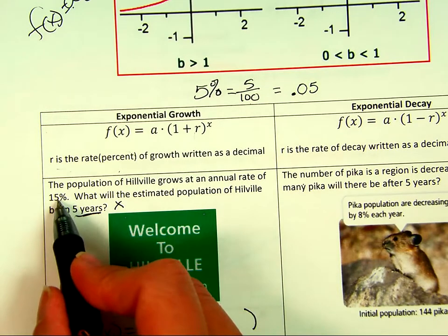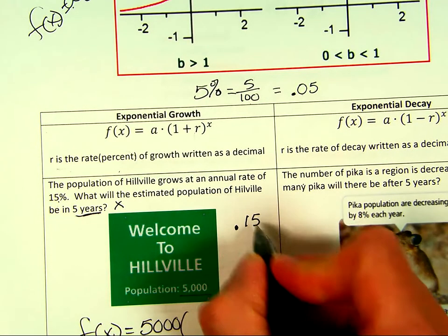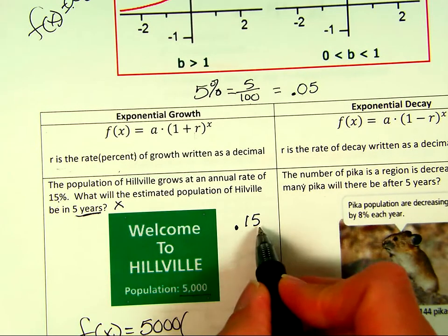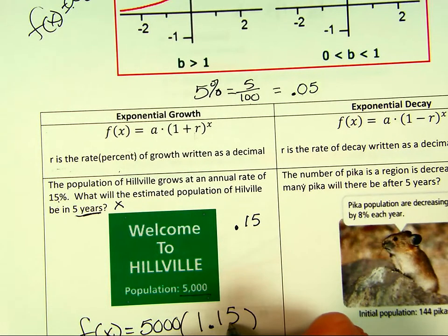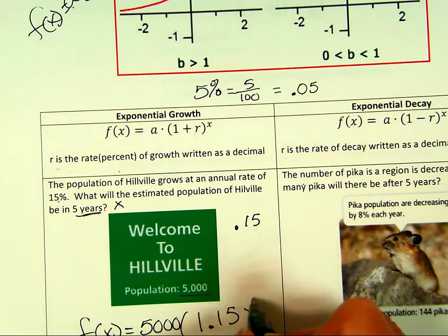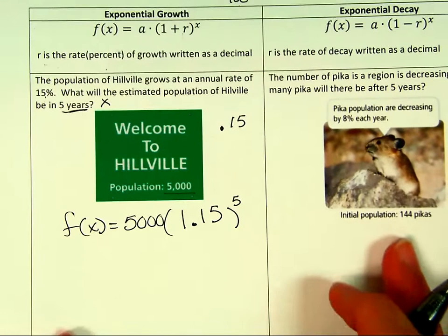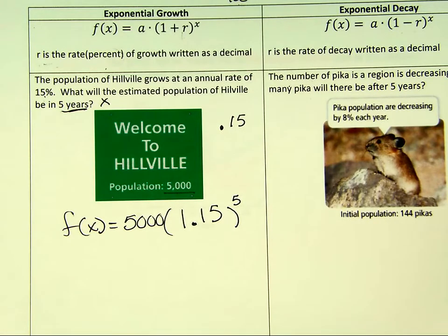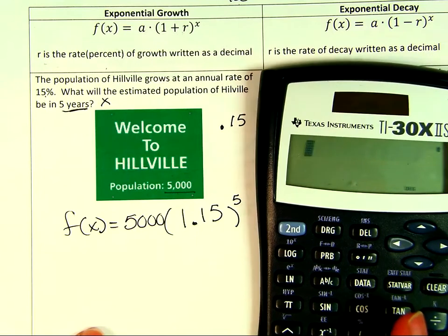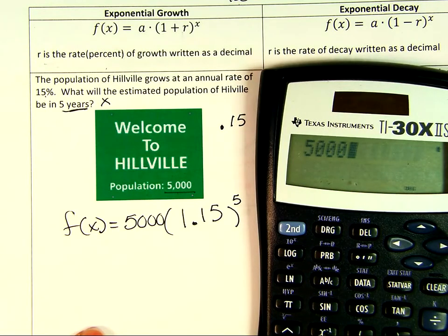We have 15%. How do we write that as a decimal? 0.15, fifteen hundredths. But we have to add 1 to it. So we say 1 plus 0.15, which is 1.15. And then our time in years is 5. So this is our model for this situation: f(x) = 5000(1.15)^5. Then it's a calculator problem. I don't try to do that on my own.